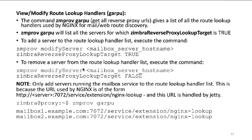To add a server to the route lookup handler list, execute ZMProveModifyServer followed by the hostname of the mailbox node, then set the ZM reverse proxy lookup target attribute to true. To remove a server, set ZM reverse proxy lookup target to false. A quick note: only add servers running mailbox services to the route lookup handler list — do not add your MTAs or LDAP servers to this list.